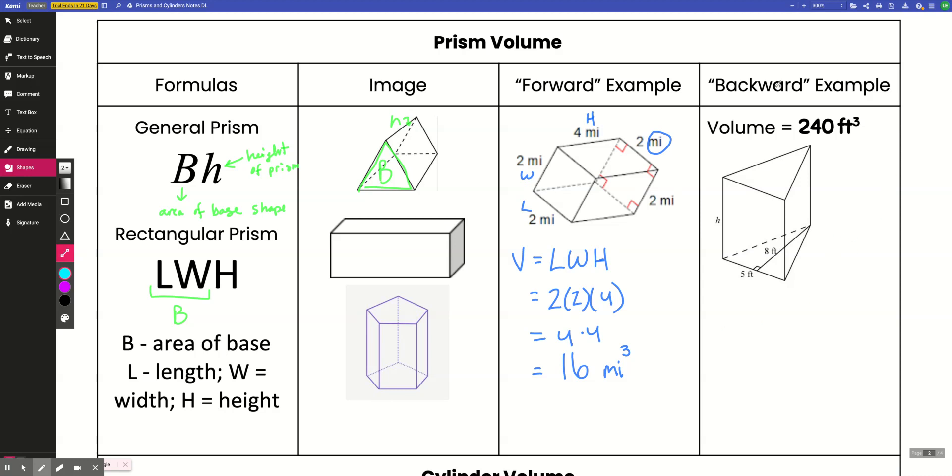Here is a backwards example for you, where I'm going to give you the volume, and you have to find something that's missing. So here in this problem, I'm looking for the height of the prism. But I do know that lowercase b, so the base of the triangle is 5, and I do know that the height of the triangle is 8.